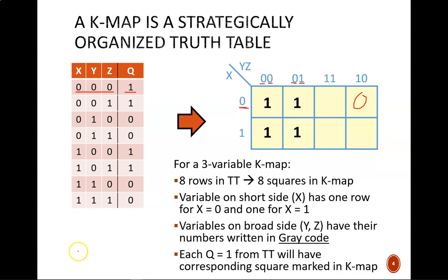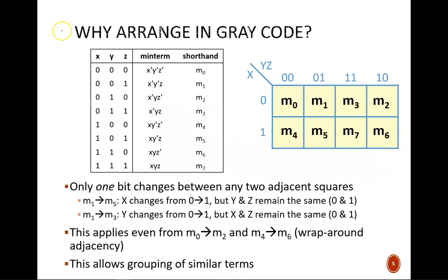Note that the Y, Z values are written in gray code across the top. This is not a straight binary count. It goes 00, 01, 11, 10. A very common mistake is to switch the last two headers. So, be careful when drawing your own K-maps.